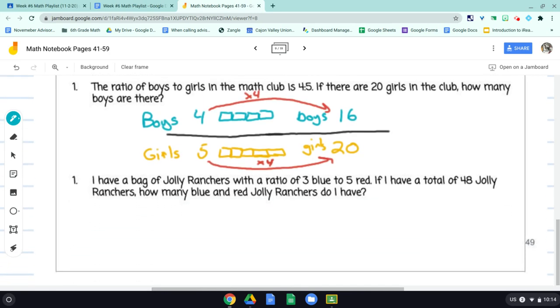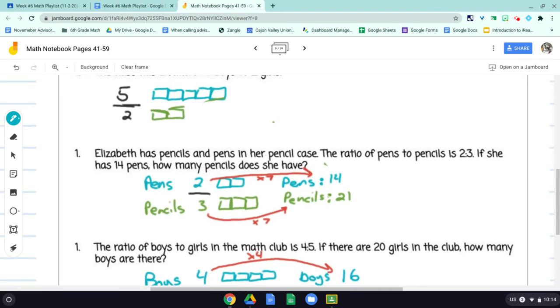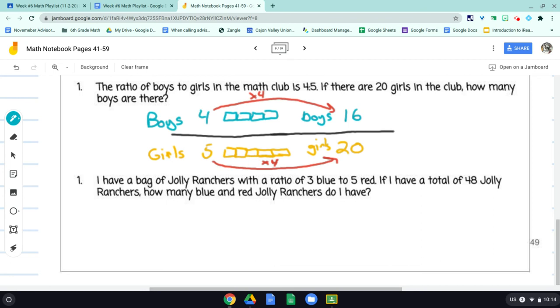Number one says, another number one. I have a bag of Jolly Ranchers with a ratio of 3 blue to 5 red. If I have a total of 48 Jolly Ranchers, how many are blue and how many red Jolly Ranchers do I have? What a tough one. Okay.